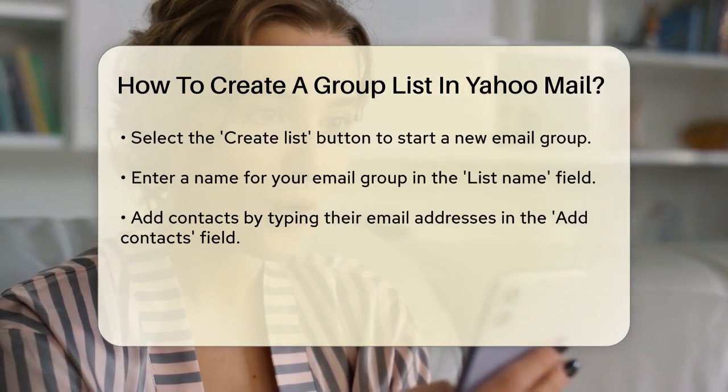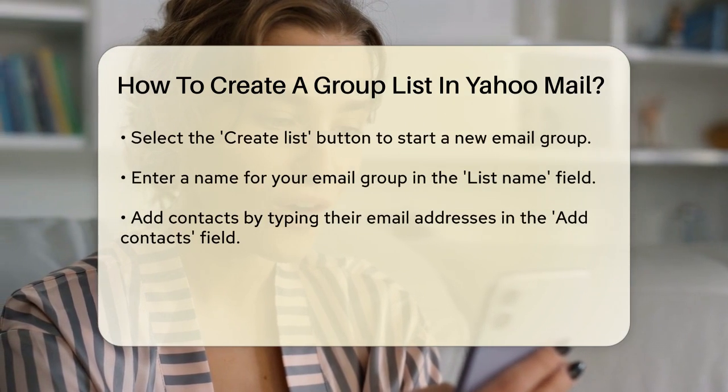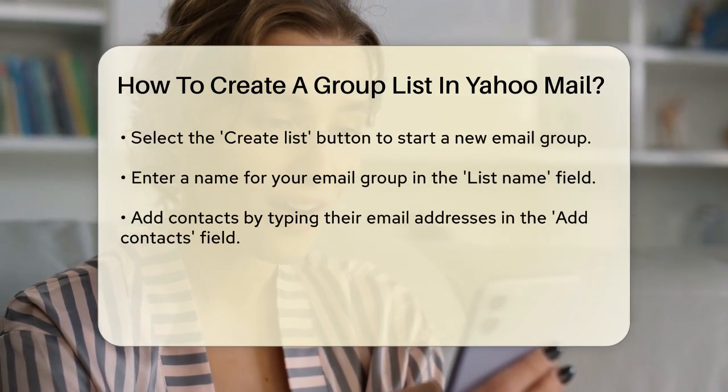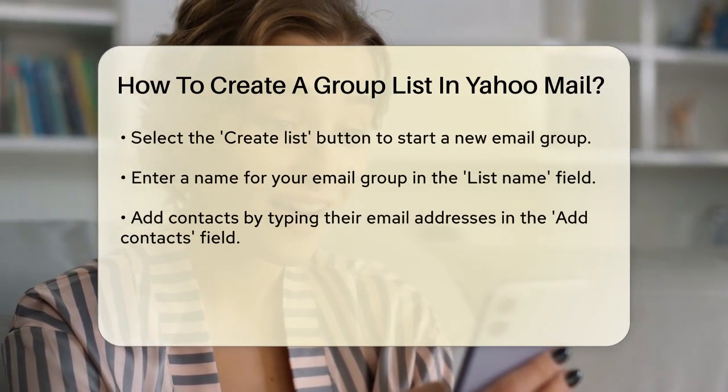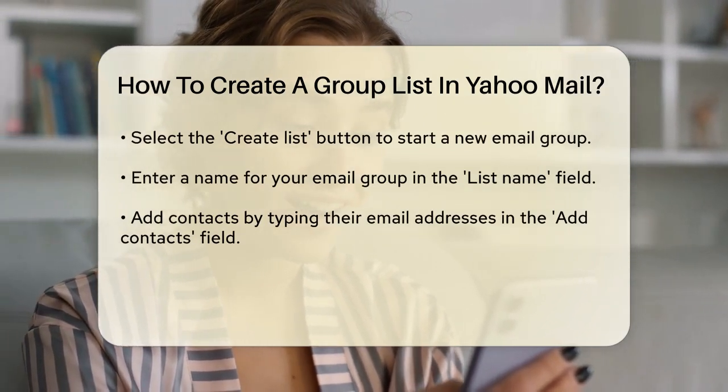Next, you'll need to give your email group a name. Enter a name for your group in the List Name field. This name will help you identify the group when you're sending emails.